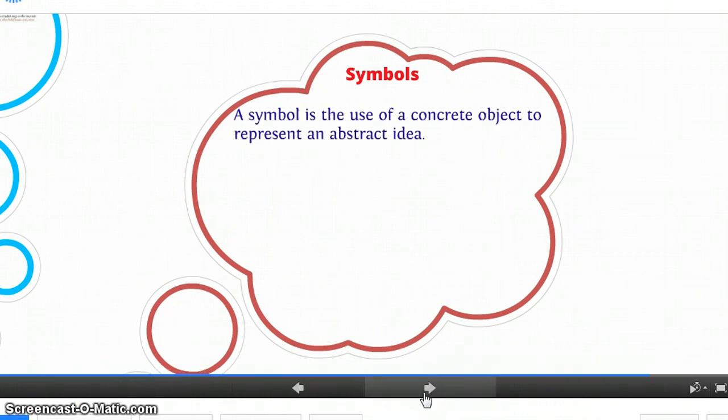All right, our next one, symbols. All right, a symbol is the use of a concrete object to represent an abstract idea. So if you aren't sure about those words concrete and abstract, a concrete object means like a real physical object. It could be, you know, kind of anything. A stop sign is technically a symbol.